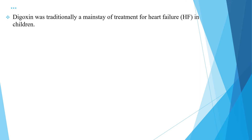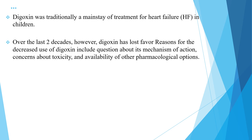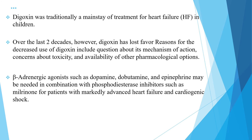Digoxin was traditionally a mainstay of treatment for heart failure in children, but over the last two decades it has lost favor due to concerns about its mechanism of action, toxicity, and the availability of other pharmacological options. Beta-adrenergic agonists such as dopamine, dobutamine, and epinephrine may be needed in combination with phosphodiesterase inhibitors such as milrinone for patients with markedly advanced heart failure and cardiogenic shock.